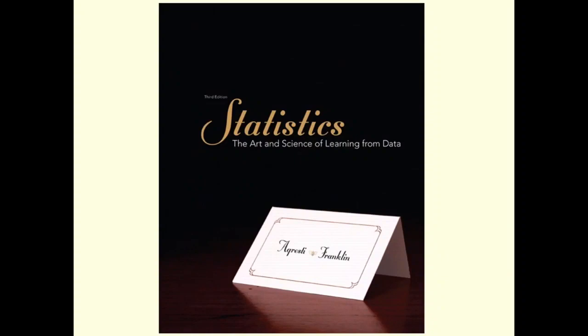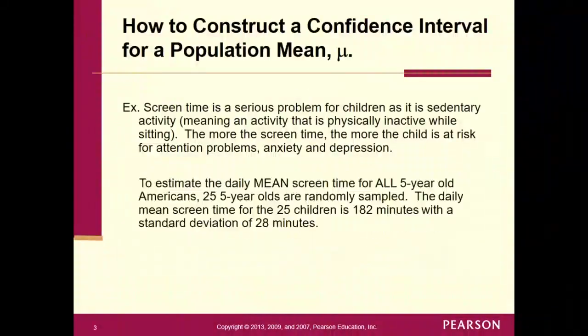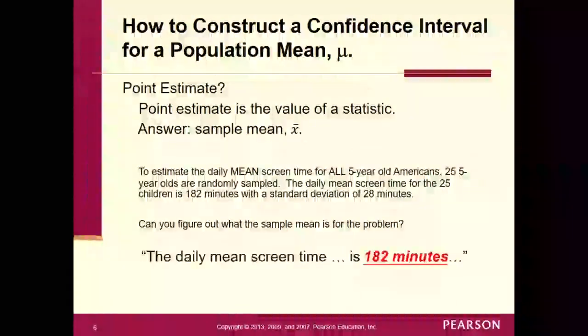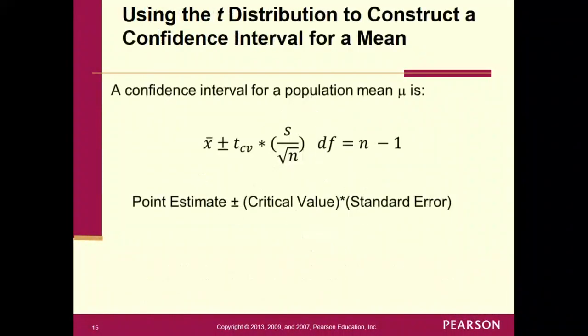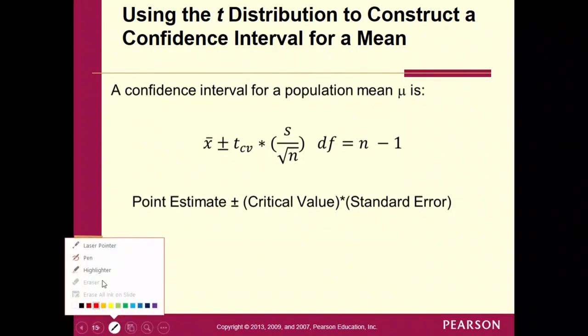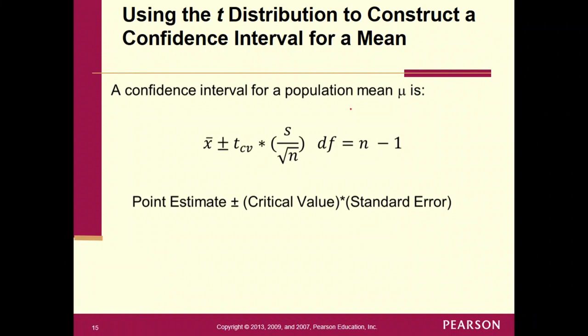So this is the second half of 8.3. I'm going to go ahead and forward through this stuff here and get to the slide that we left off at before. So a confidence interval for a population mean mu, here's our formula.